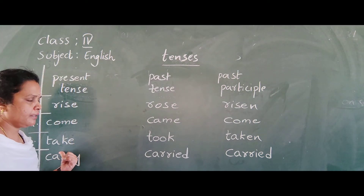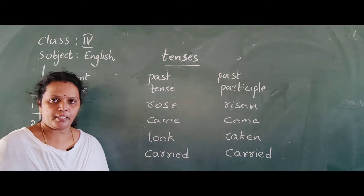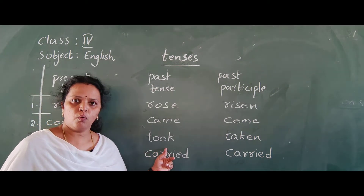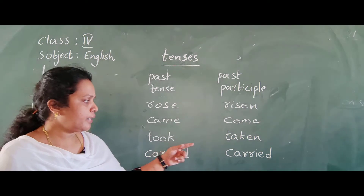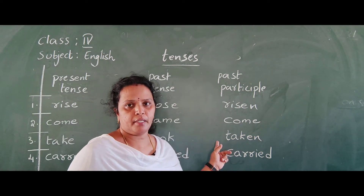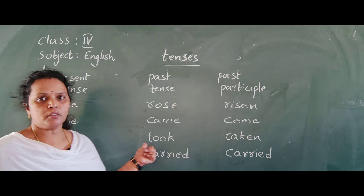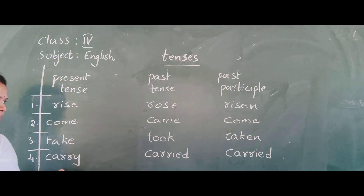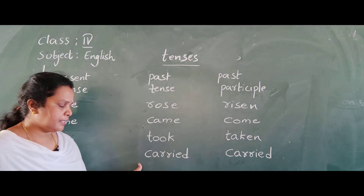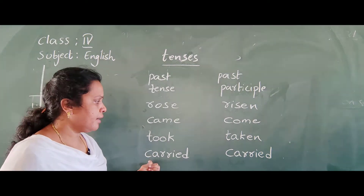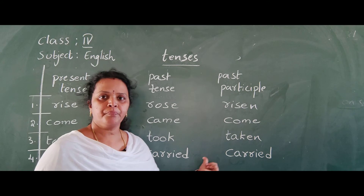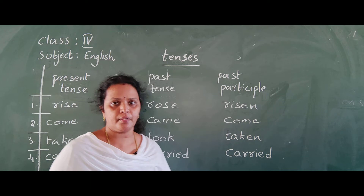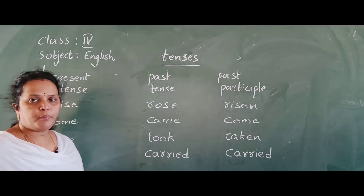Third one: Take — T-A-K-E. What is the past tense of take? Took — T-O-O-K. Past participle: Taken — T-A-K-E-N. Take, Took, Taken. Fourth one: Carry — C-A-R-R-Y. Carried — C-A-R-R-I-E-D. Carry, Carried, Carried. Once all of you copy this down.